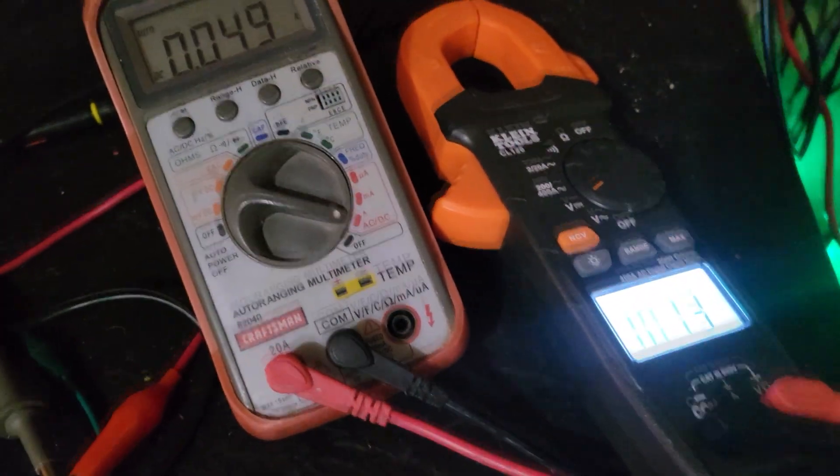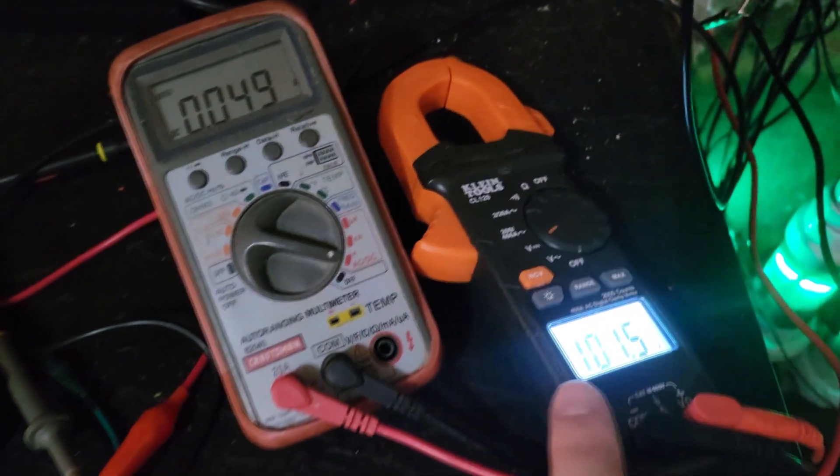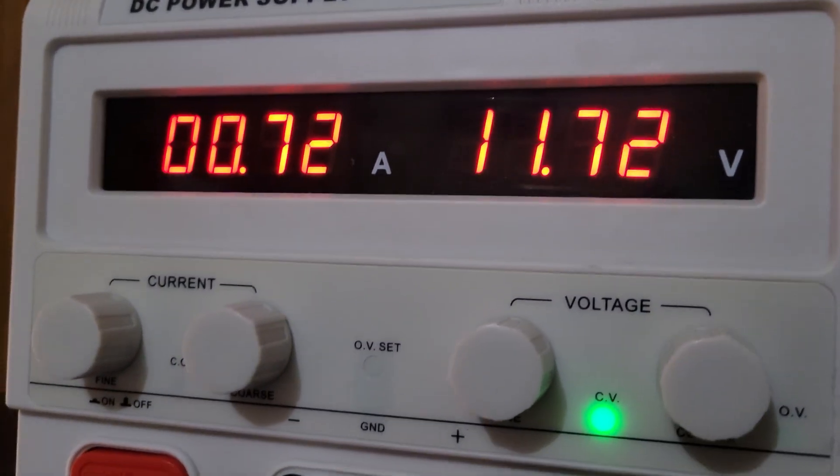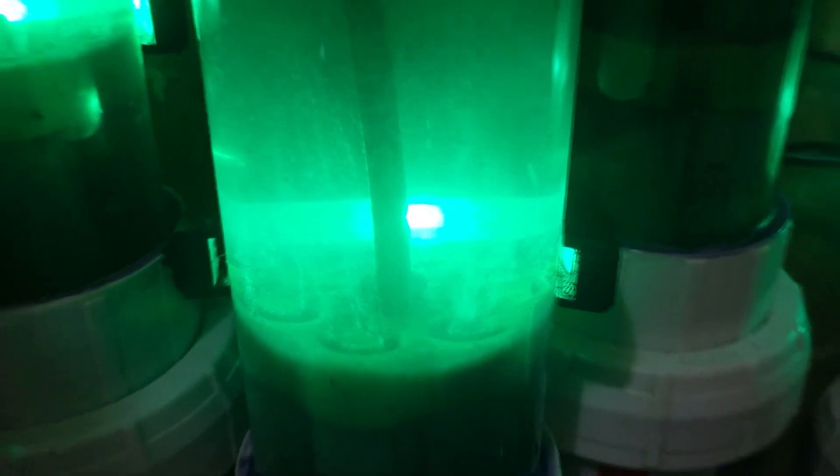So apparently amperage consumption also skyrockets over 100 volts, because right now we only have 12 volts in at less than an amp. But look at the production. Nothing much. So at 100 volts we have production but it's very limited, very limited.